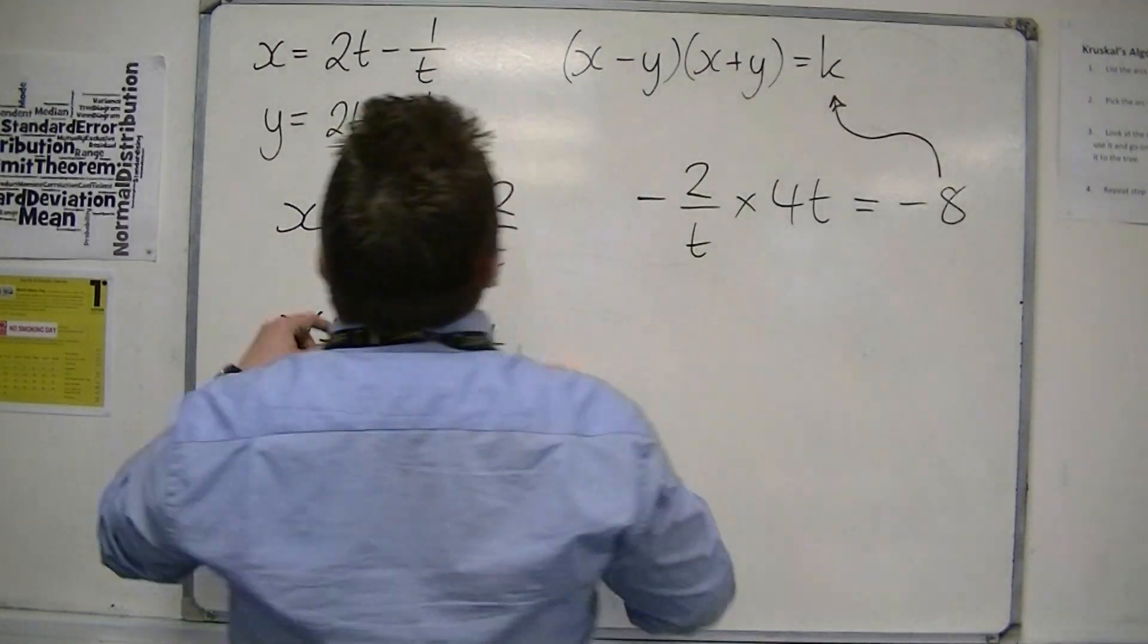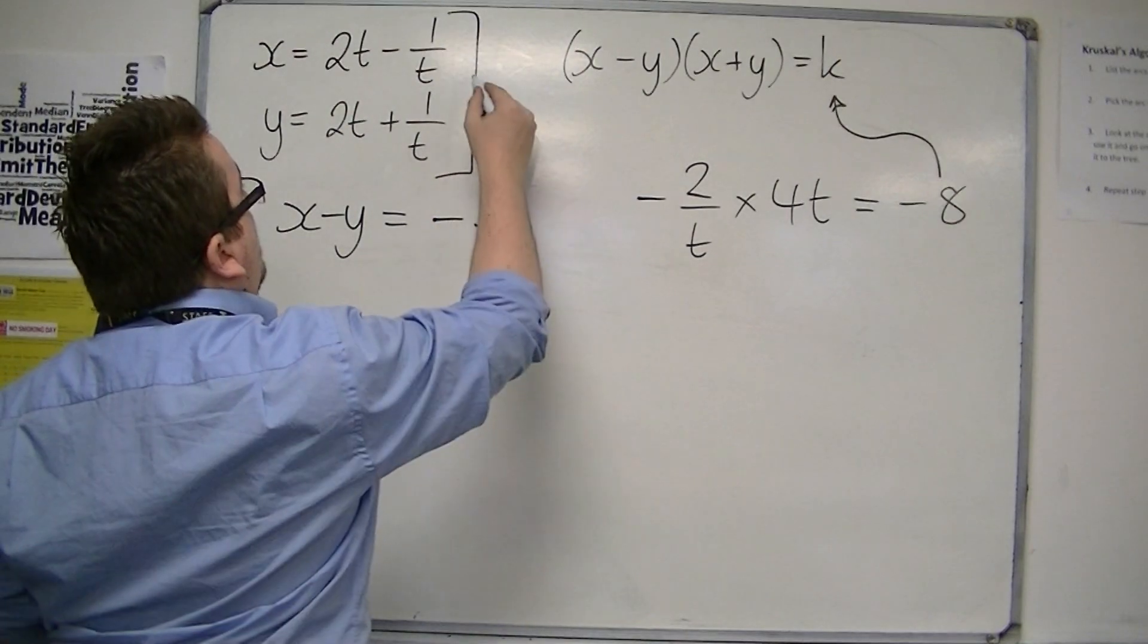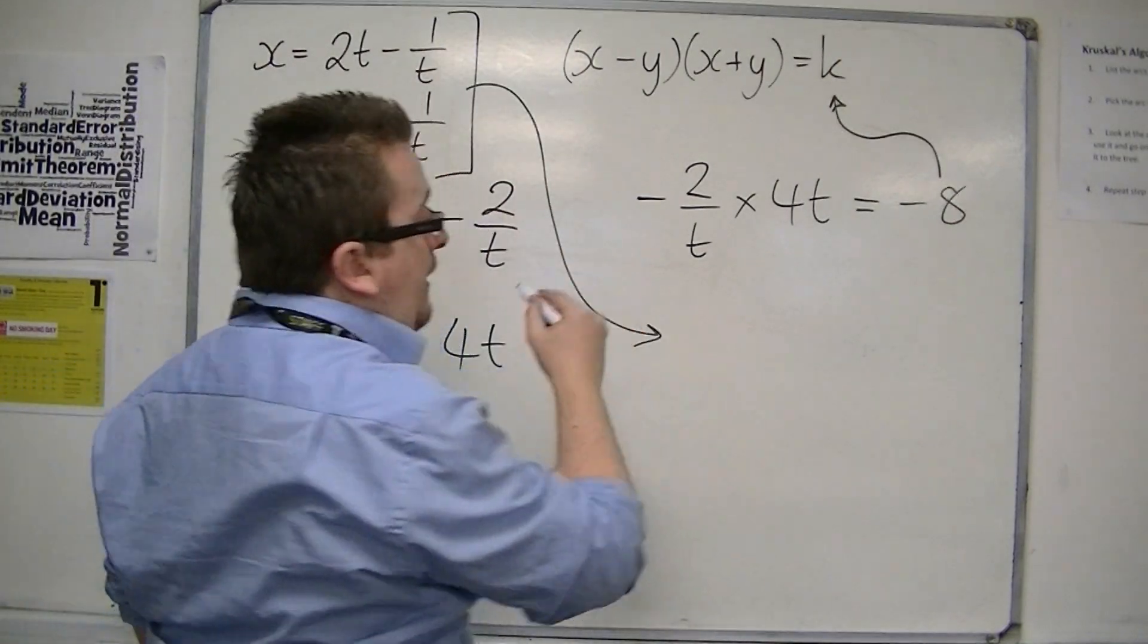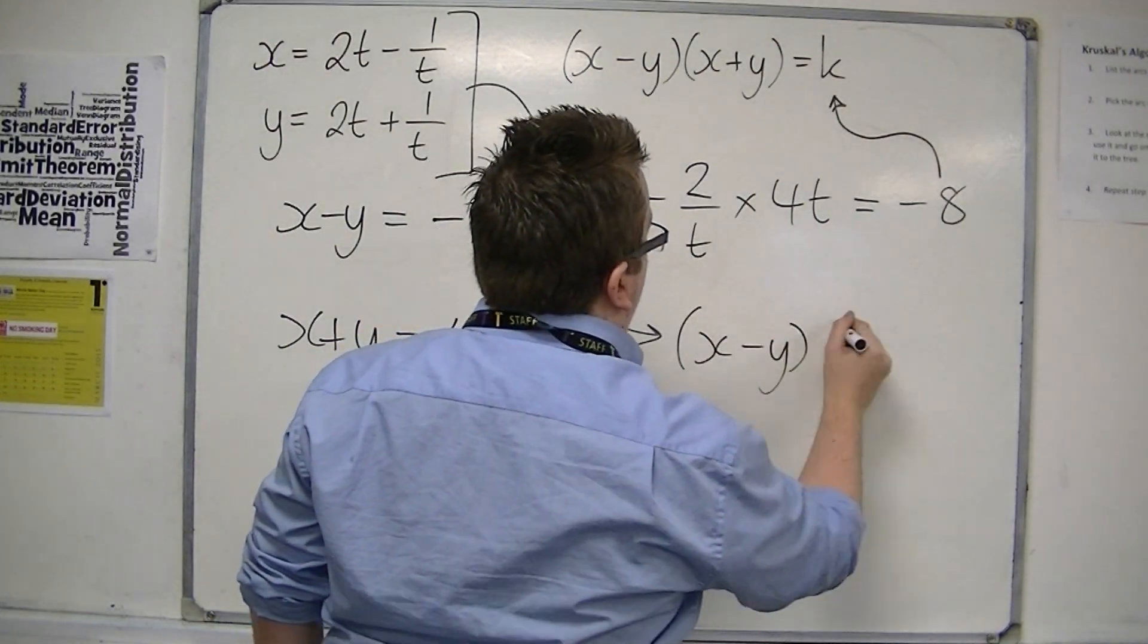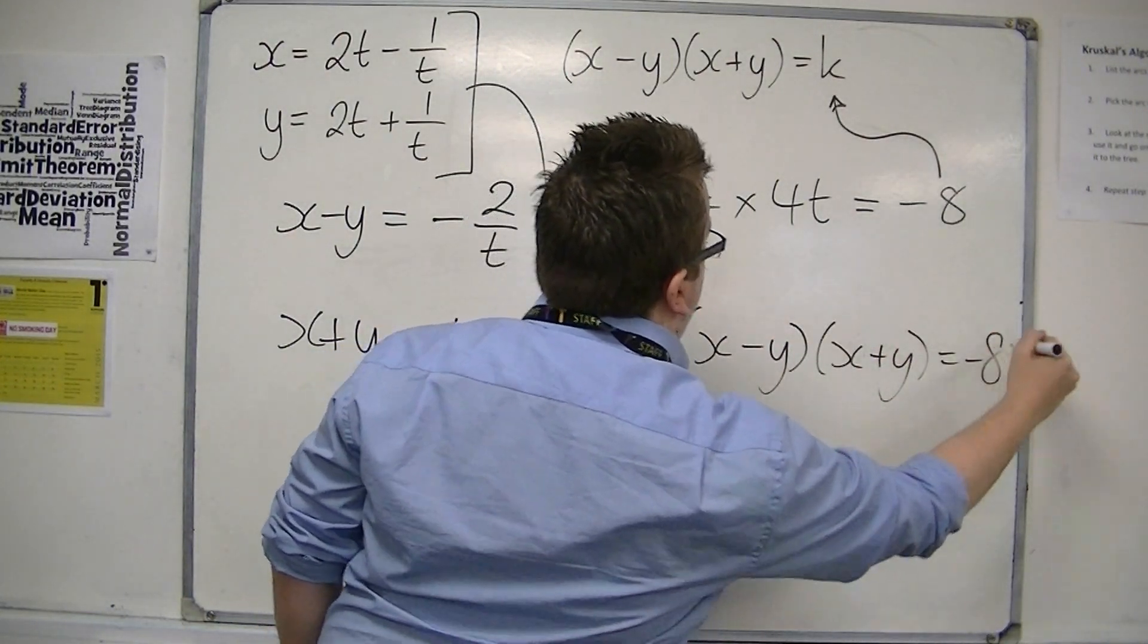So that means that to convert these two parametric equations into Cartesian form, all it is is x minus y times x plus y equals minus 8.